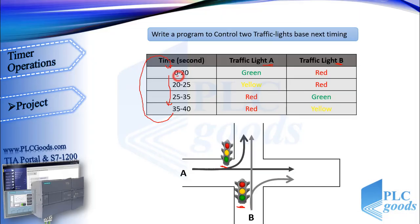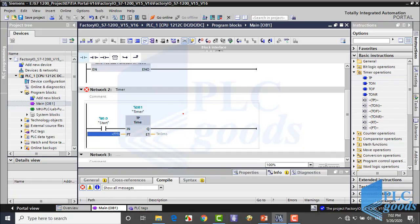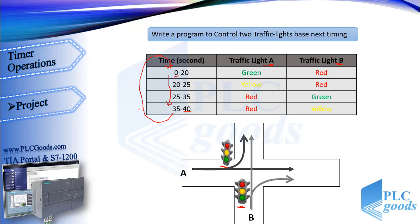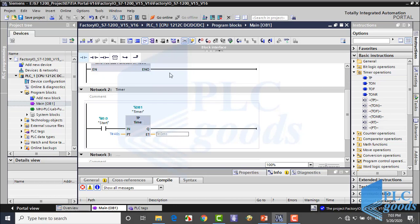See here, one cycle of the traffic lights work lasts 40 seconds, so the preset time is 40 seconds. Also, this cycle works frequently, and I know after 40 seconds the Q output of pulse timer will have a negative pulse. So I can use this pulse to start my timer again.